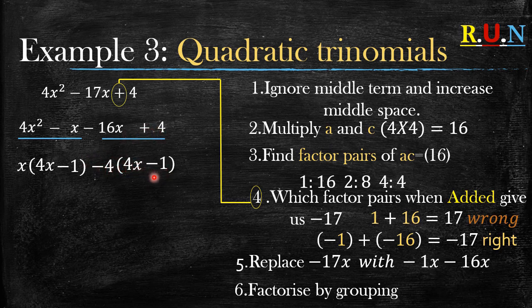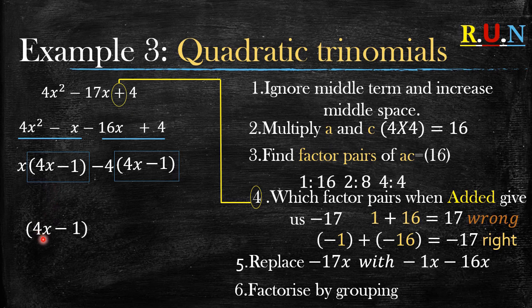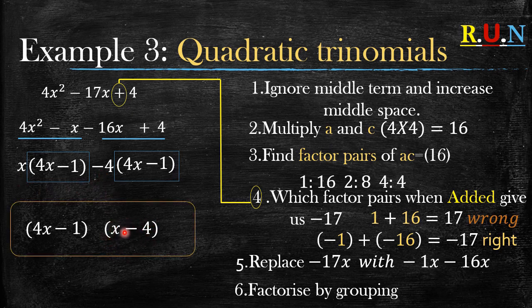Positive 4 divided by negative 4 equals negative 1. Check your brackets: 4x minus 1 and 4x minus 1 — they are the same, so you're on the right track. Take one of those brackets as the first part of your answer, and x minus 4 as the second part. That's the answer for example three.